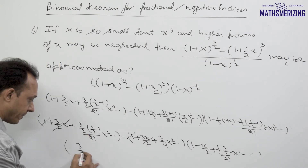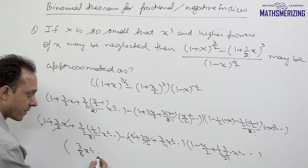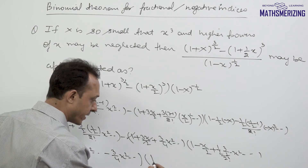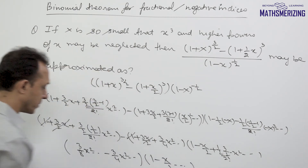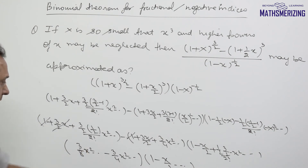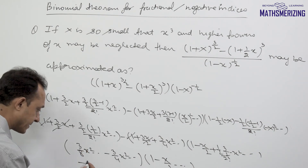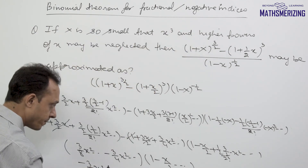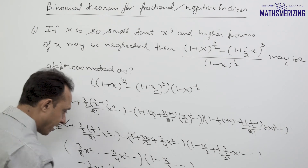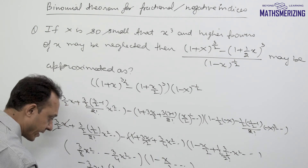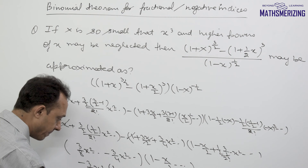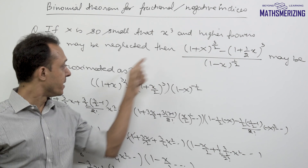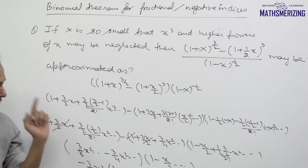After canceling and simplifying, we get (3/8)x² minus (3/4)x², which gives minus (3/8)x². Multiplying by (1 - x/2) and ignoring x³ and higher powers, this expression may be approximated as minus (3/8)x².